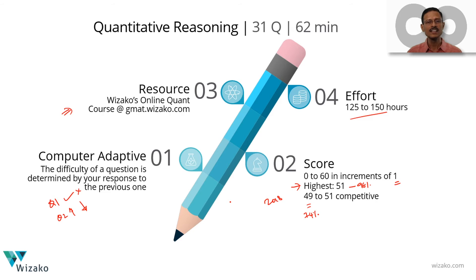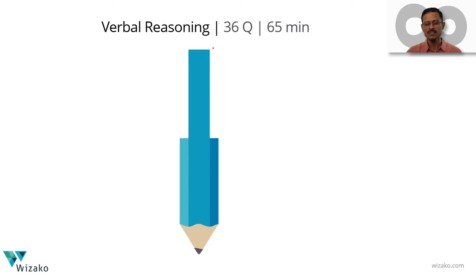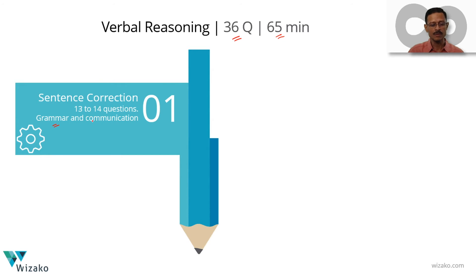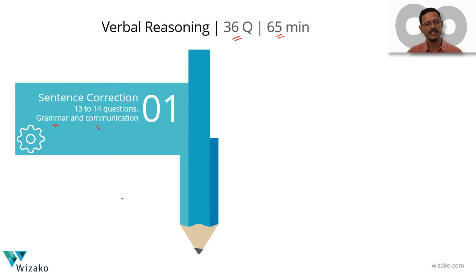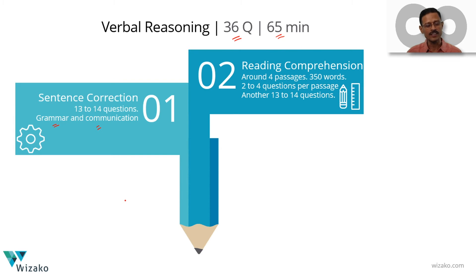Now let's move to Verbal Reasoning — 36 multiple choice questions in 65 minutes, with three variants. The first is sentence correction, which tests grammar and communication. About 13 to 14 of the 36 questions are from sentence correction — it's the easier one in terms of preparation, highly correlated to the number of questions you solve during prep. The second is reading comprehension: 4 to 5 passages appear, each under 350 words, with 2 to 4 questions per passage, totaling another 13 to 14 questions.